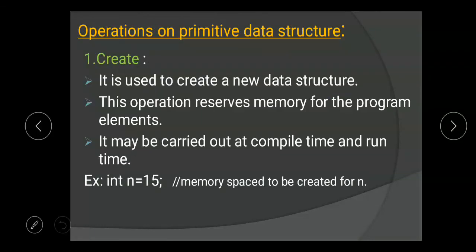We have some operations on primitive data structures. The first is the create operation, which is used to create a new data structure. This operation reserves memory for the program elements. It may be carried out at compile time or run time. For example: int n = 15 — when you create n = 15 of integer type, memory space is created for n.